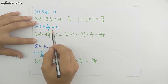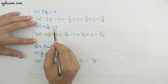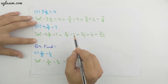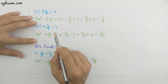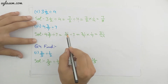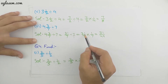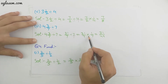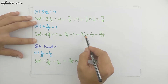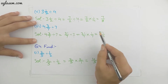Sixth part: 4 whole 3/7 divided by 7. The mixed fraction 4 whole 3/7 changes to the improper fraction 31/7, and 7 becomes 7/1. So 31/7 divided by 7/1 becomes 31/7 multiplied by 1/7. Multiplying gives 31/49, which is a proper fraction.